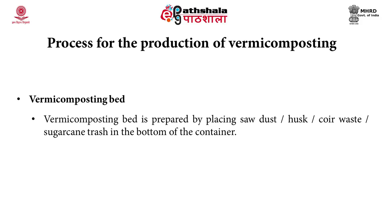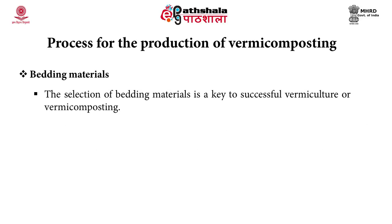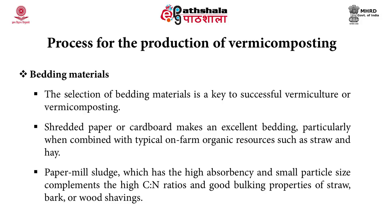The vermicomposting bed is prepared by placing sawdust, husk, coir waste or sugarcane trash at the bottom of the container. A layer of fine sand is spread over the culture bed, followed by a layer of garden soil, and the layers are moistened with water. The selection of bedding material is key to successful vermiculture. Shredded paper or cardboard makes excellent bedding, particularly when combined with typical on-farm organic resources such as straw and hay. Paper mill sludge, with high absorbency and small particle size, complements the high C:N ratios and good bulking properties of straw, bark or wooden shavings.